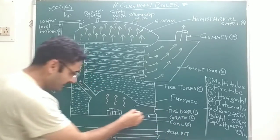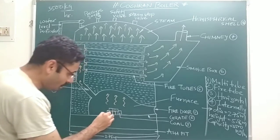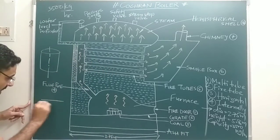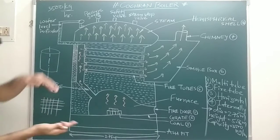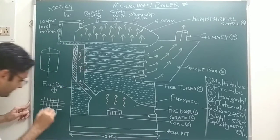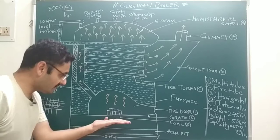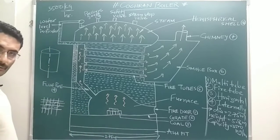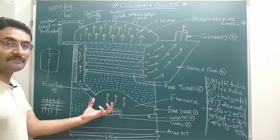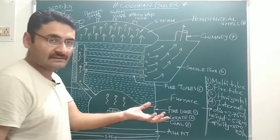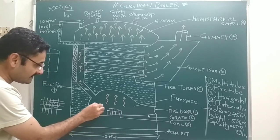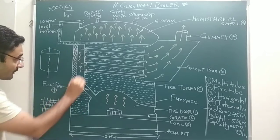We insert coal as fuel and place it on the surface of the grate. The grate is a net-like surface — a grill — on which we put pieces of coal. After placing the coal on the grate, we ignite the coal, and due to the ignition, combustion of the coal takes place.